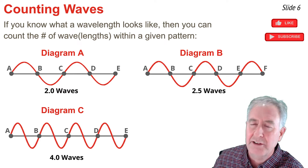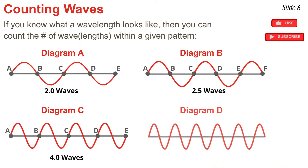In diagram D, it gets a little tricky at the end. A to B is one wave, B to C is a second, C to D is a third, D to E is a fourth, E to F is a fifth. But from F to G is not a full wave — it's only a half wave. So the total is 5.5 waves counted in diagram D.